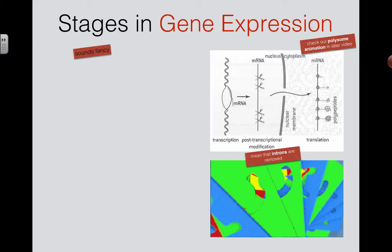Gene expression is a term you see all over the place, and it's hard to really understand what it means unless you've learned about transcription and translation. DNA is the genetic code and it contains things called genes — little sections of important bits of DNA that actually code for something useful, and that something useful is always a protein.